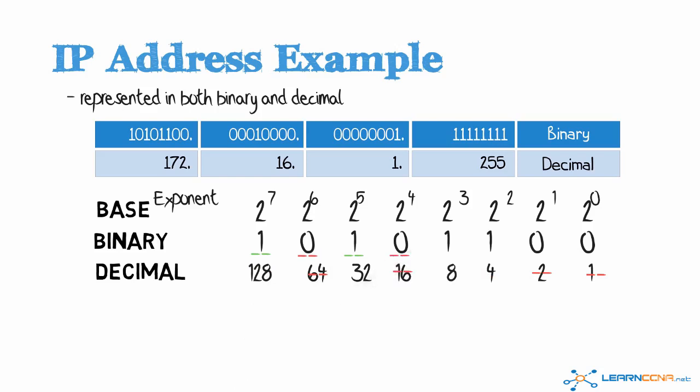So first bit is 128, 64 is not used, third bit is 32, fourth bit is not used, fifth bit is 8, sixth bit is 4, and the last two bits are not used.